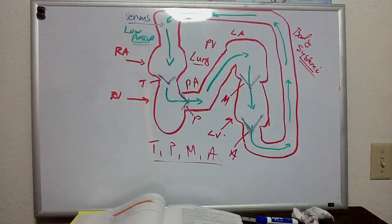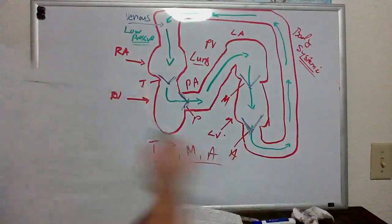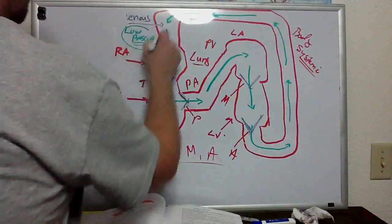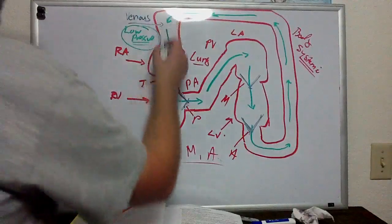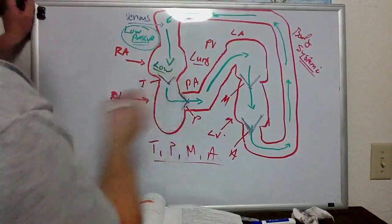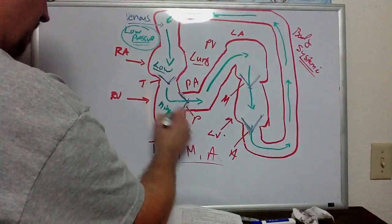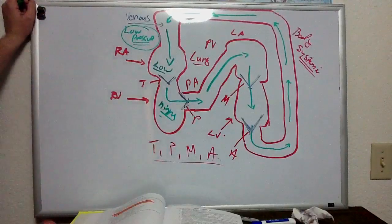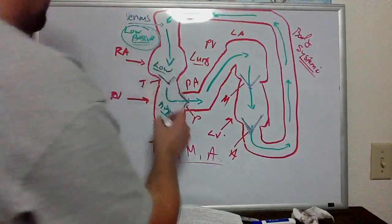Let's talk about the pressures. So I have low pressure here in the venous system. Low pressure here. Once it enters the right ventricle, it gets higher. Higher pressure. Low, higher.